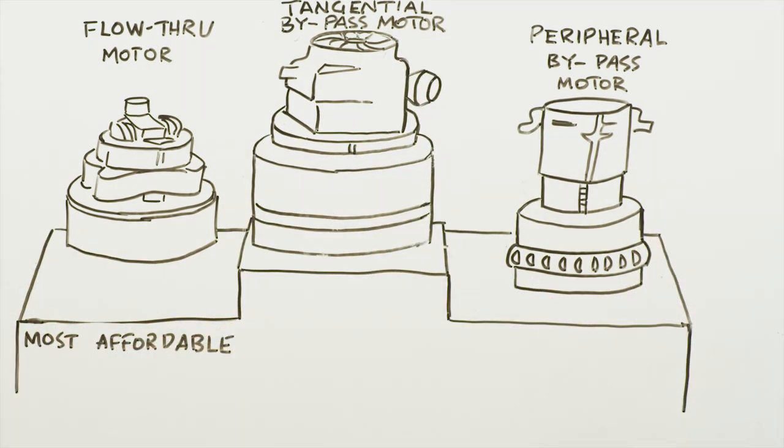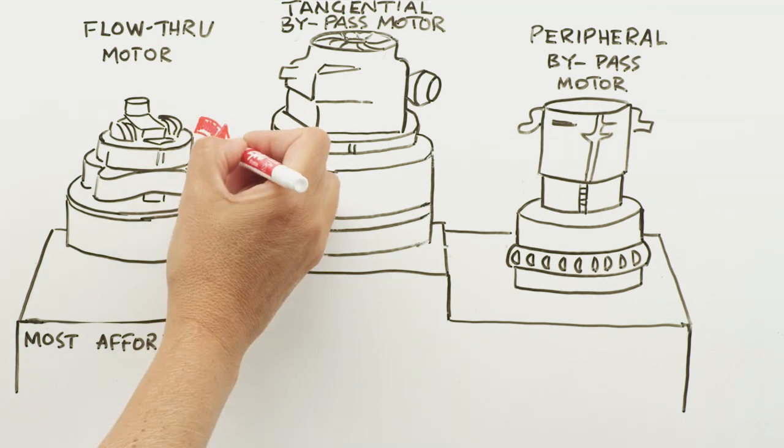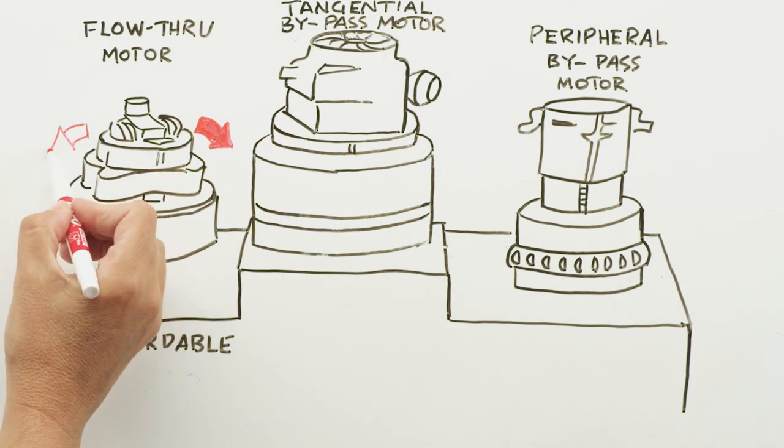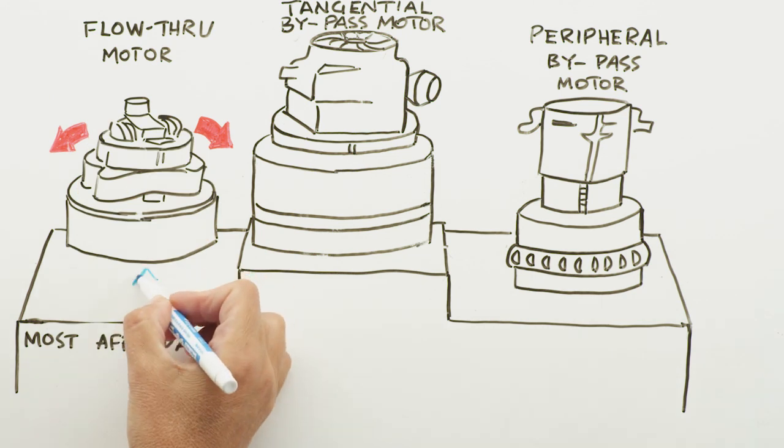A flow-through motor is the most affordable, but it typically has the shortest life expectancy. Does not have a dedicated cooling fan, and uses exhausting air to cool the motor. This is a good motor, but the least desirable of the three.